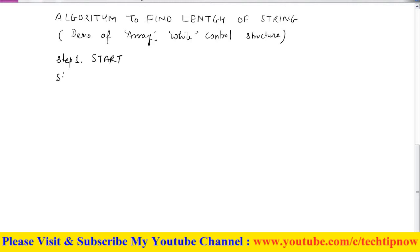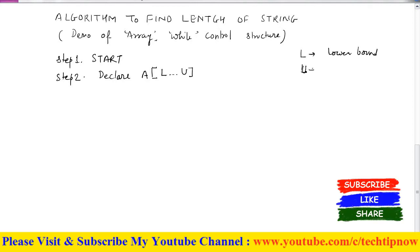In the next step, I will declare the array. I am declaring the name of my array as A. I will put square brackets where I will write L dot dot U. Here the meaning of L is lower bound, which means the low index, and the meaning of U is upper bound.